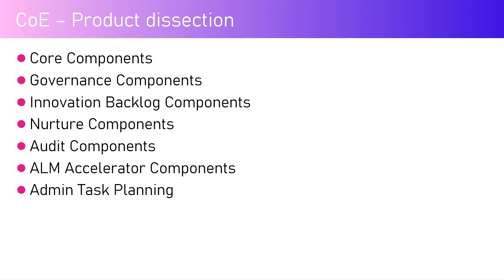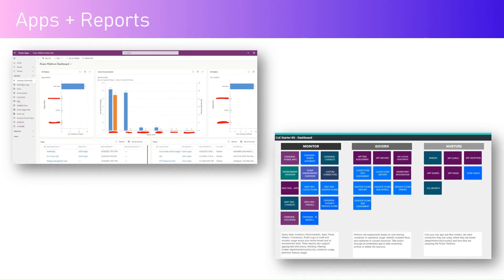Moving on, the CoE product contains several key components. When you install the CoE Starter Kit, a lot of components come along with it. The highlighted components are: core components, governance components, innovation backlog components, nurture components, audit components, ALM accelerator components, and admin task planning. These will be covered in more depth in future videos.